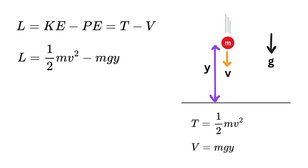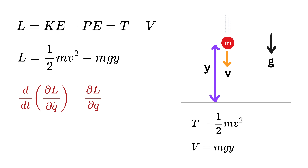The beauty of Lagrangian mechanics lies in how we compute the equation of motion. We first compute the partial derivative of L with respect to q, then compute the partial derivative of L with respect to q-dot and take its derivative with respect to time t. Simply subtract both terms and equate to zero.